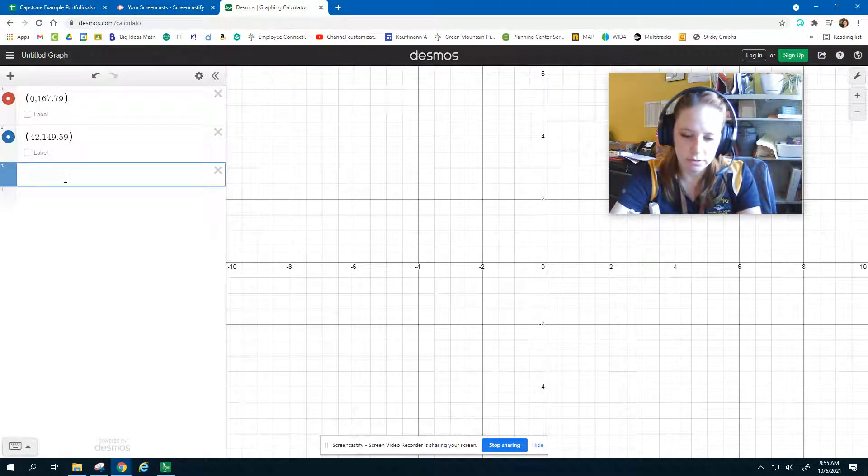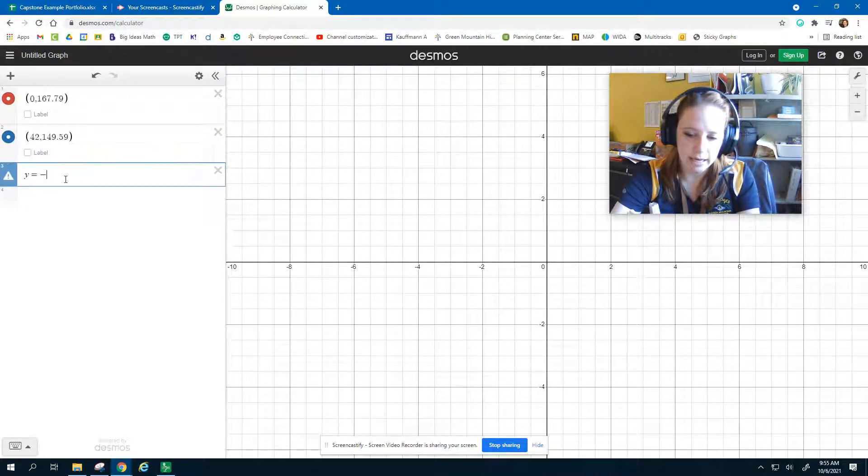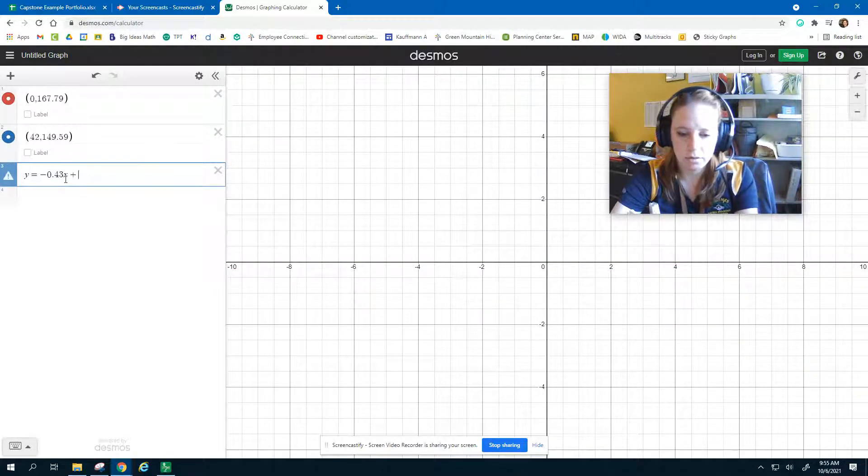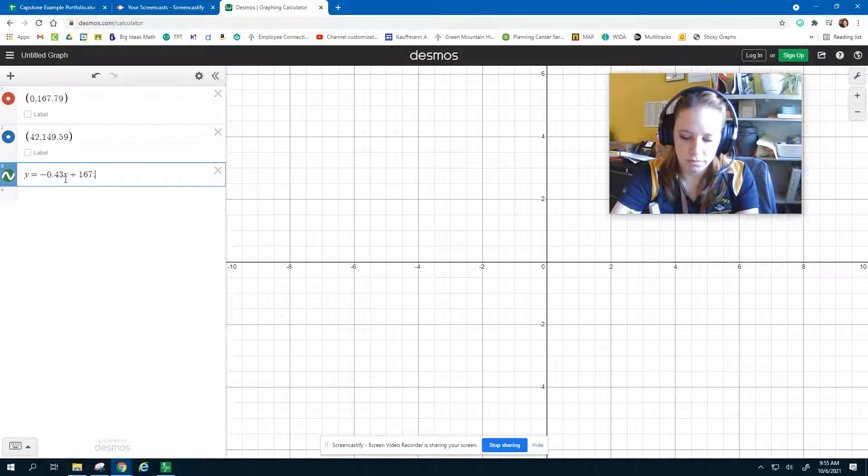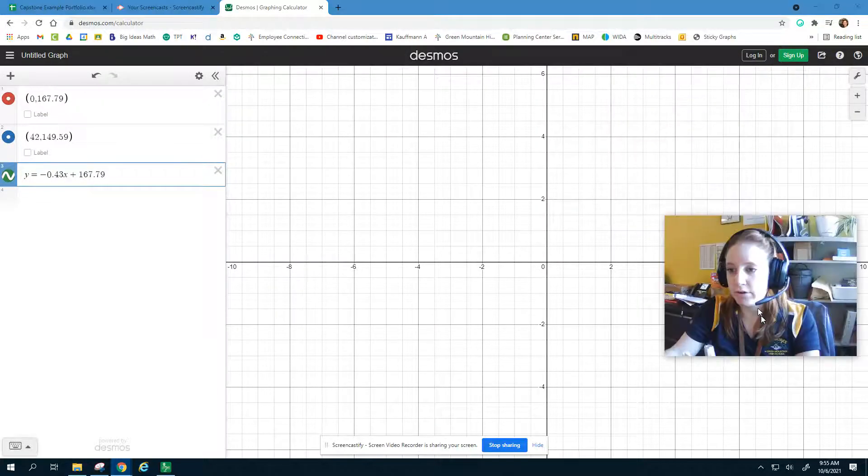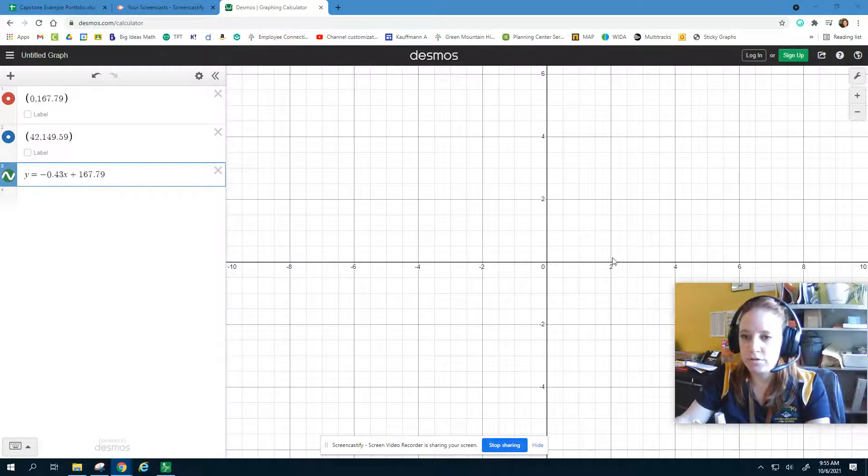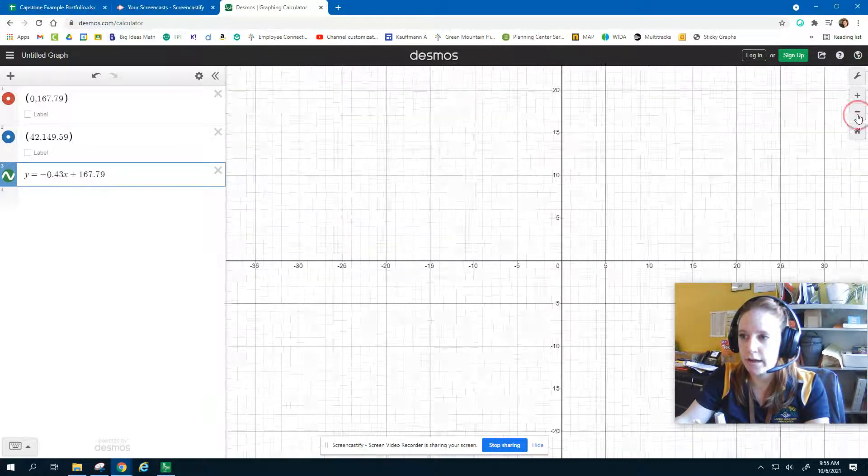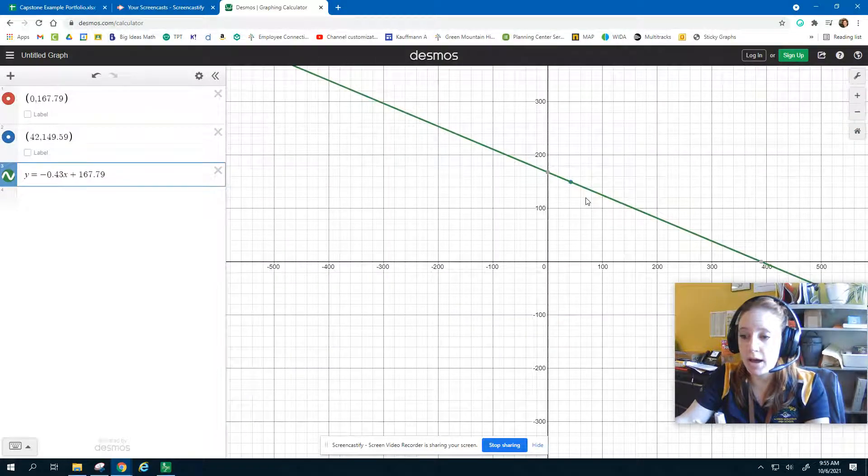Finally, in the third one, put your equation: y equals negative 0.43x plus 167.79. Now, I can't see anything on my graph right now. So we need to zoom out. I just click out, or you can use this zoom out option here, until you can see your model.